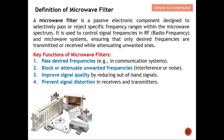Let's understand the definition of a microwave filter. A microwave filter is most of the time a passive electronics component that is designed to selectively pass or selectively reject a specific frequency range within the microwave spectrum. It is used to control signal frequency in RF and microwave systems, ensuring that only desired frequencies are transmitted or received while attenuating the unwanted ones. In short, the filter allows desired signals to pass while rejecting the rest.